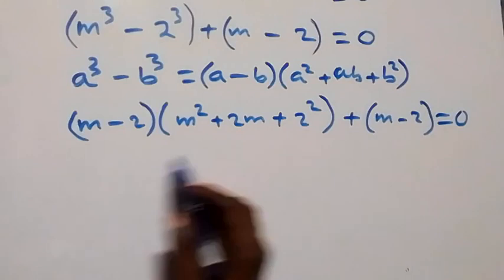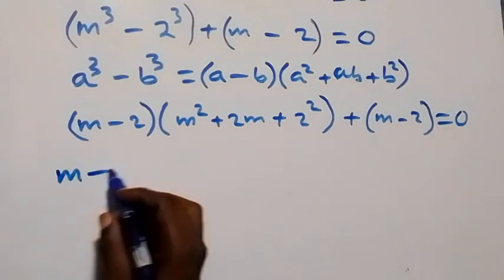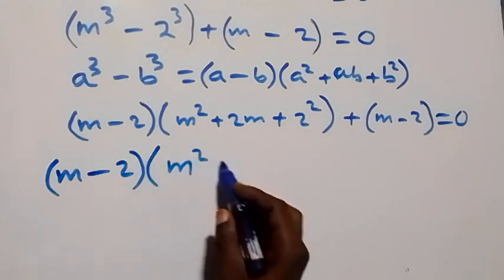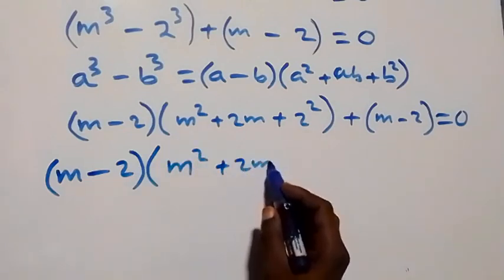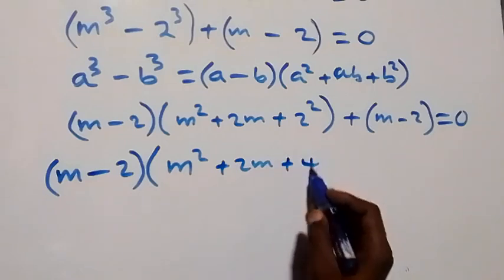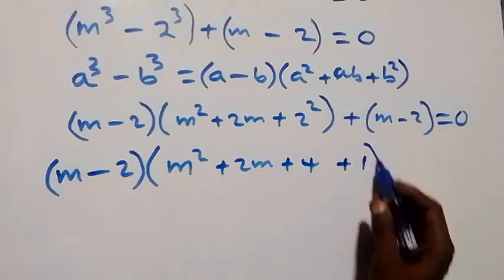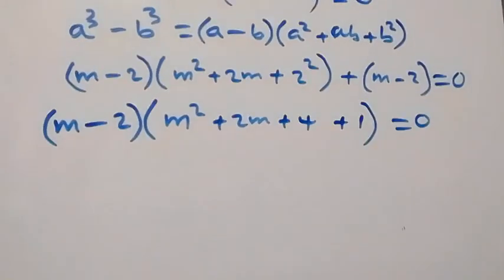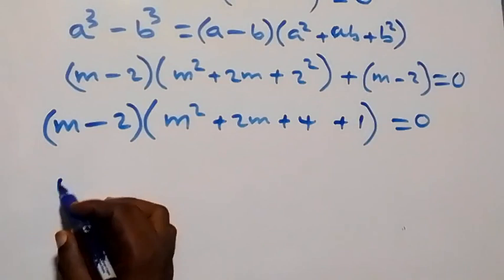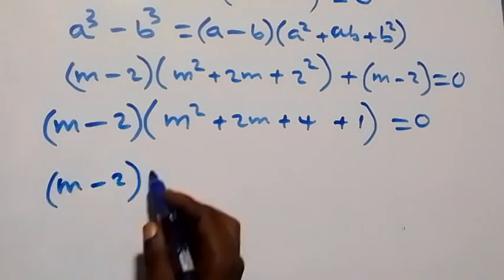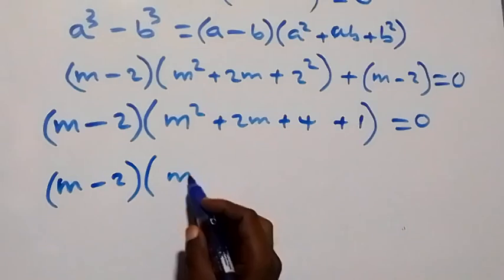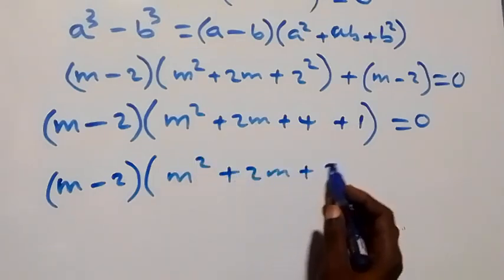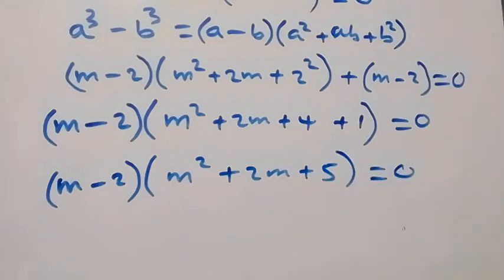We then have m minus 2, times m squared plus 2m plus 4, plus m minus 2, equals 0. Factoring out the common factor m minus 2, and noting the remaining bracket gives plus 1, we get m minus 2, times m squared plus 2m plus 5, equals 0.